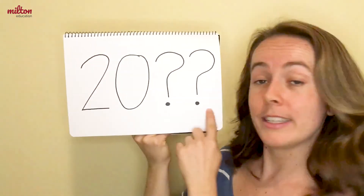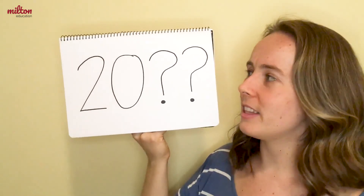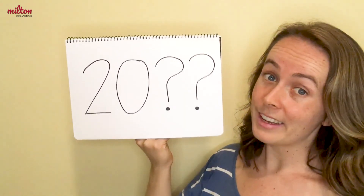Maybe you were born in 2010, or maybe you were born like me in the last century, in 1969. So now we are finished talking about the rules of how to say years in English. It's your turn to try the exercises — I'll see you next time, bye bye!